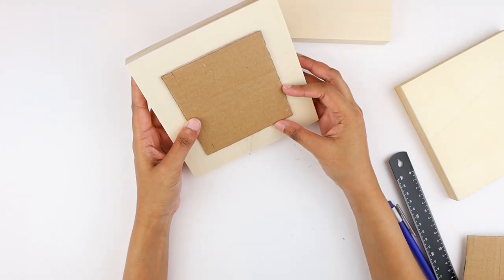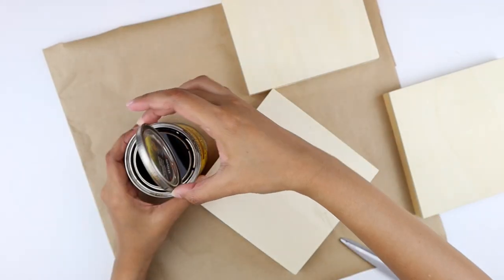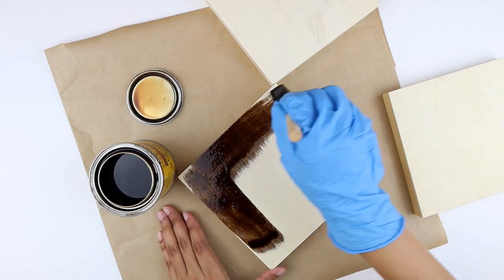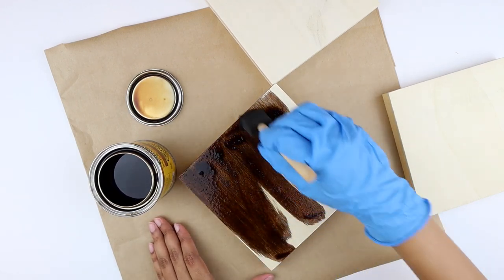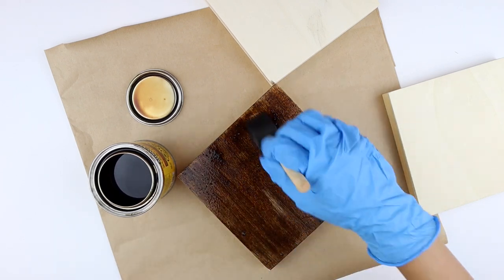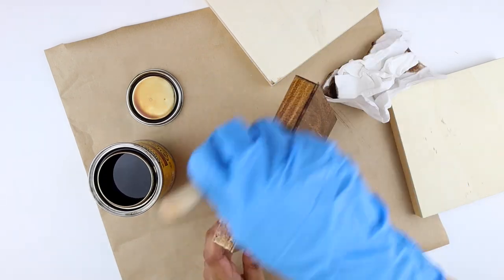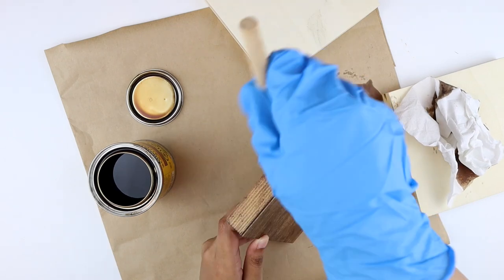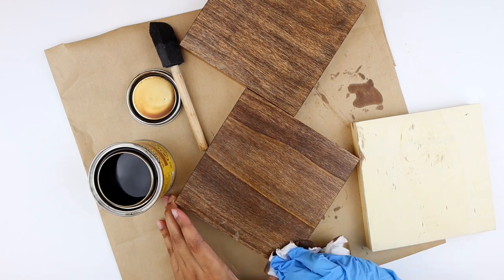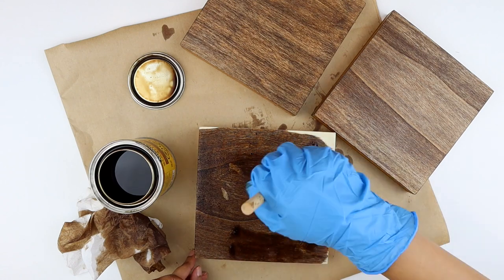Next I grabbed this wood stain in the shade Early American and started to apply the stain on the panels with a foam brush. If you don't have wood stain on hand, you can water down some dark brown acrylic paint and apply it on the wood, or you can also use any color of your choice. Then I wiped off the excess stain with a paper towel. I also stained all the sides of the panel and went ahead and stained the remaining pieces. Set them aside to dry for at least five to six hours.